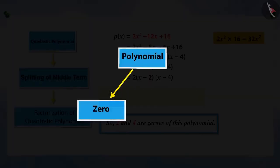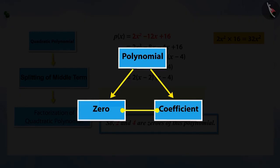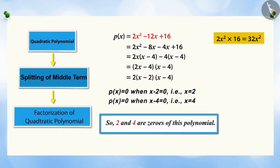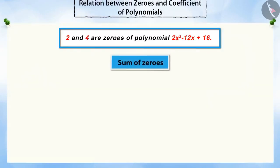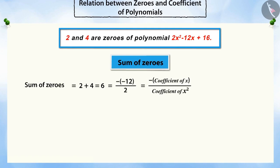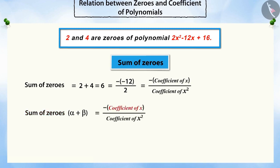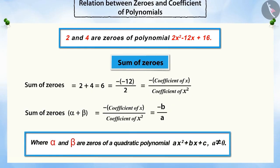Do you know that the zeros of a polynomial and its coefficients are related to each other? Let's see how. If we add the zeros, you will see that the sum of the zeros is equal to the negative ratio of the coefficient of X to the coefficient of X squared — where alpha and beta are two zeros of the quadratic polynomial AX squared plus BX plus C.